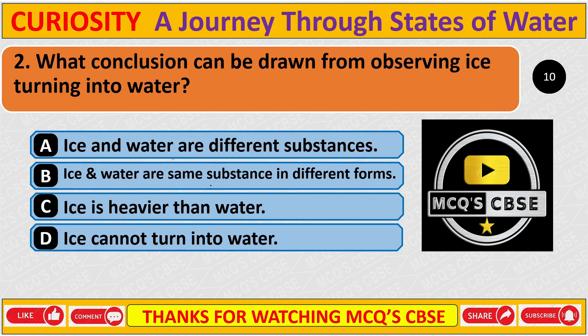What conclusion can be drawn from observing ice turning into water? The correct answer is B: Ice and water are the same substance in different forms.